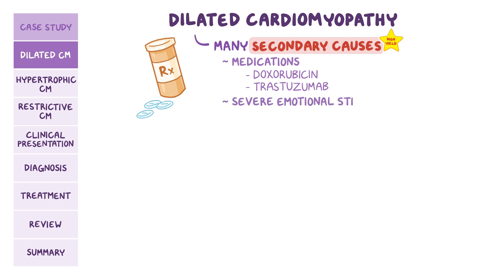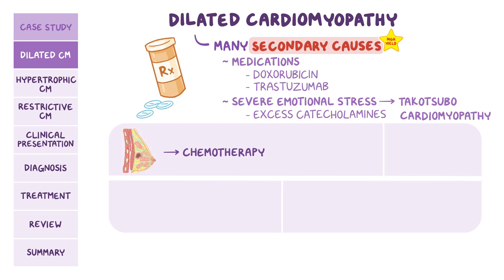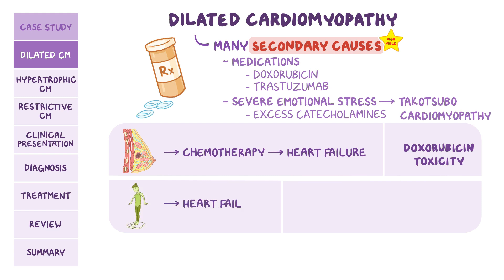Even severe emotional stress can cause a form of dilated cardiomyopathy called Takotsubo cardiomyopathy, thought to be related to a surge of catecholamines which in large amounts can be toxic to the myocardium. Examiners try to get creative with these causes — for example, a breast cancer patient treated with chemotherapy who develops heart failure should raise concern for doxorubicin toxicity. An individual with anorexia nervosa who develops heart failure raises concern for a nutritional cause like beriberi or selenium deficiency.